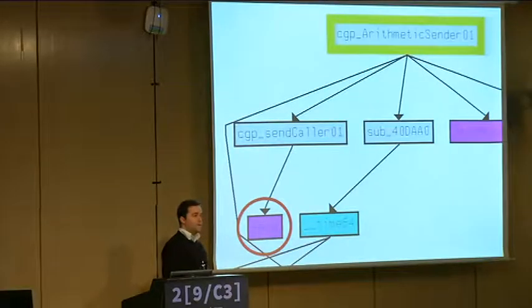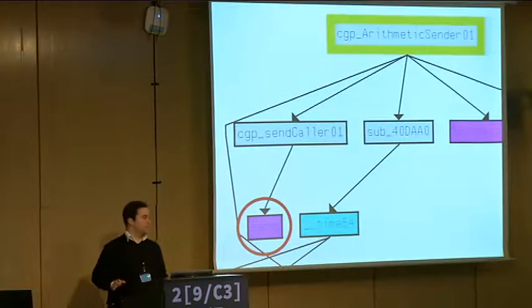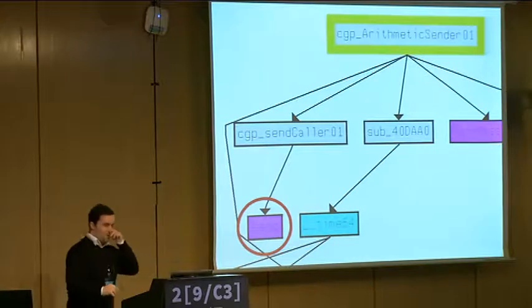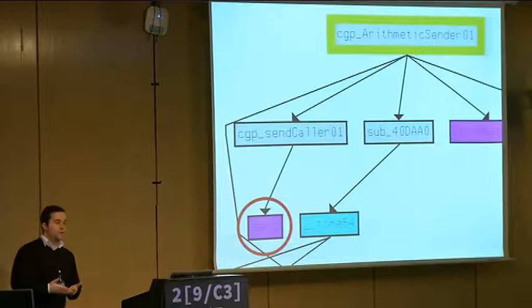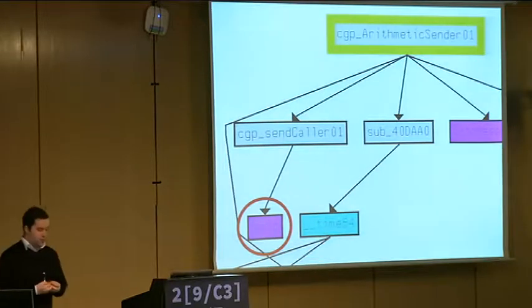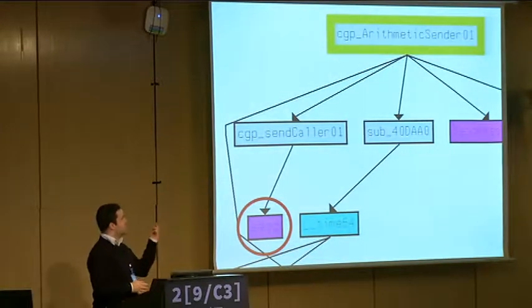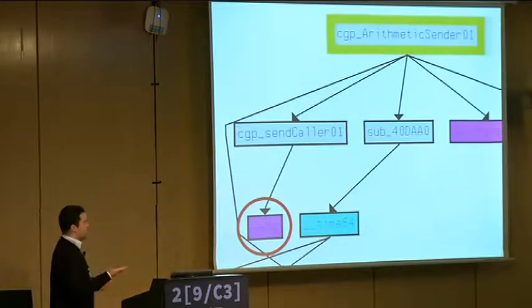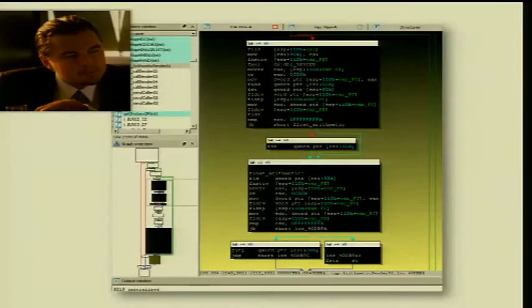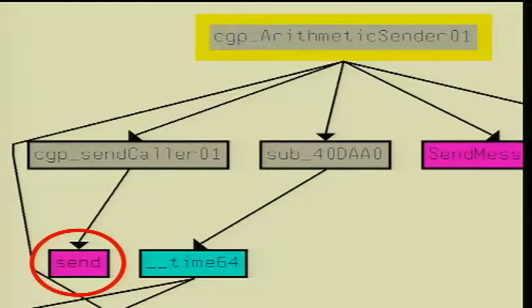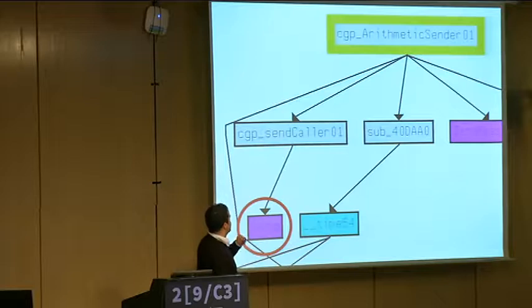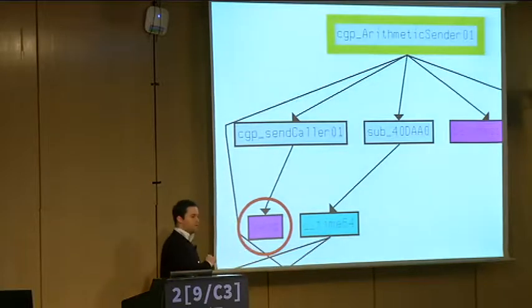Do you know why there's a graph here when I'm talking about binaries? You can always represent a binary with a graph — it's kind of a standard. Those rectangles are functions. Those arrows are the calls between the functions. That means this yellow function here looks pretty suspicious, and afterwards it just calls another function and then sends something through the network — it's pretty close to the network.